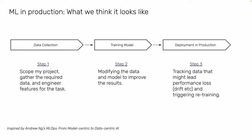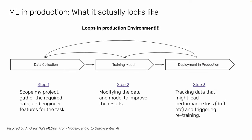Once your model is deployed, you go back and collect data again, then train the model — this loop repeats in a production environment. You might have questions: what is the loop? What is the production environment? Let's talk in detail about what the loop means and where the production environment is.